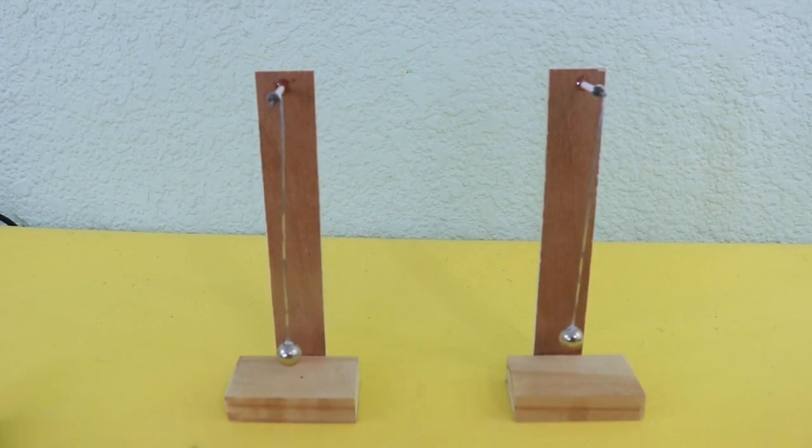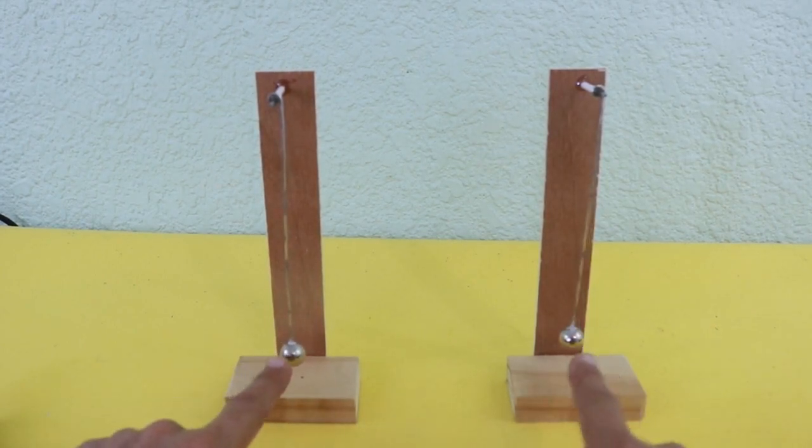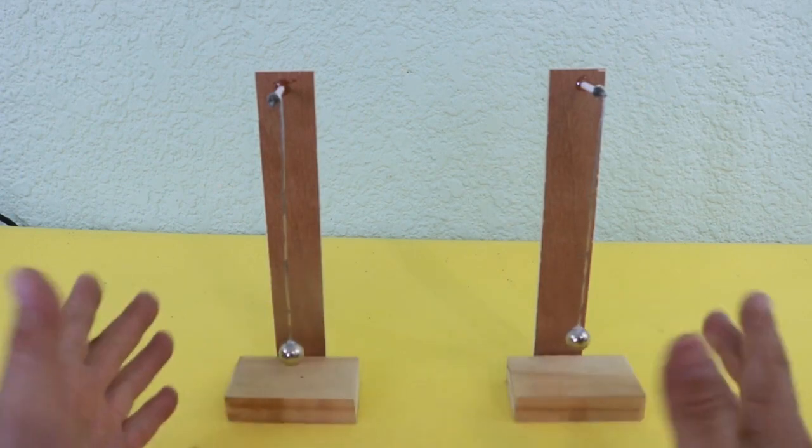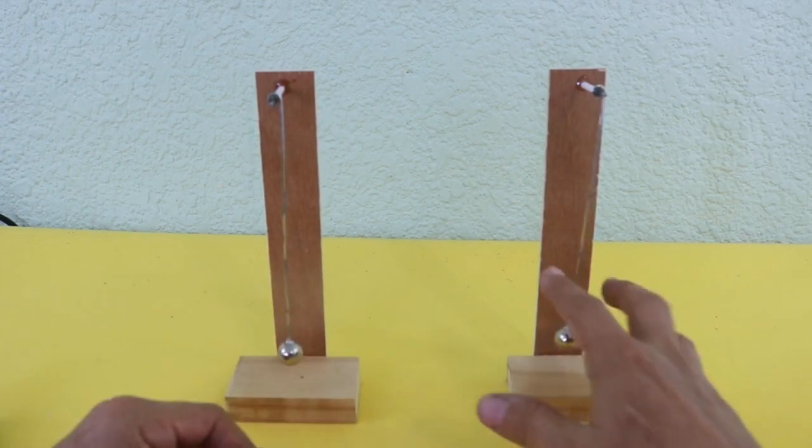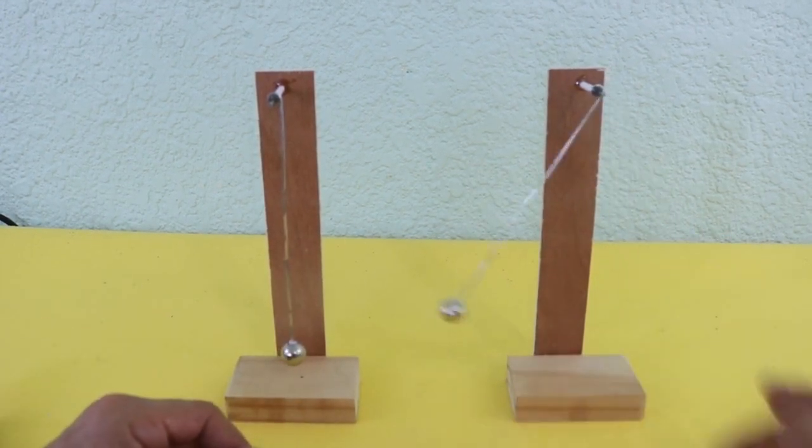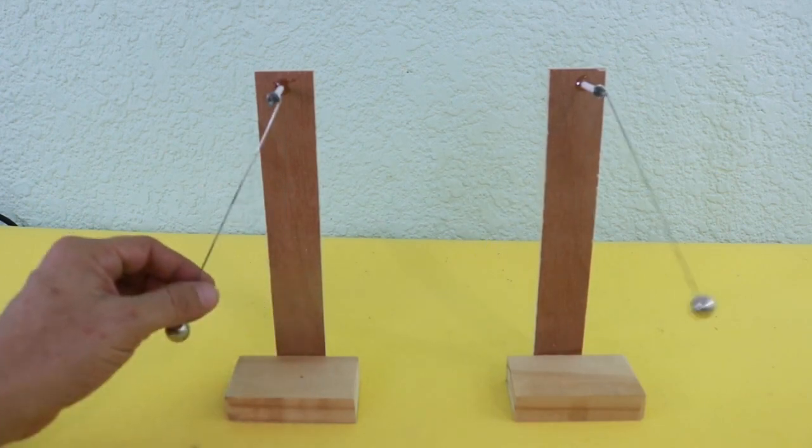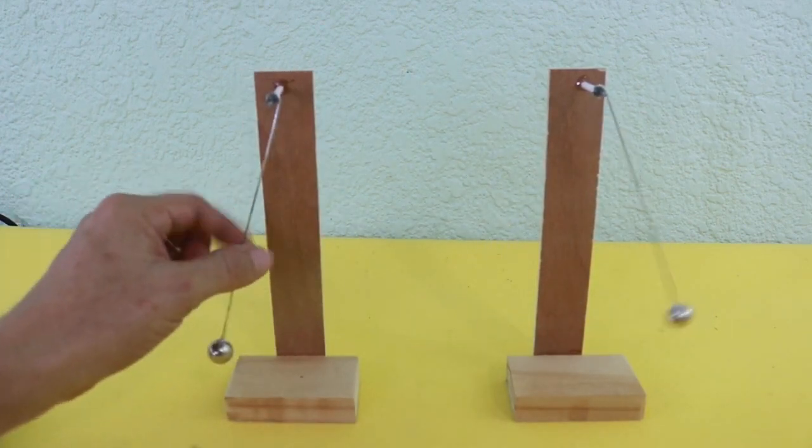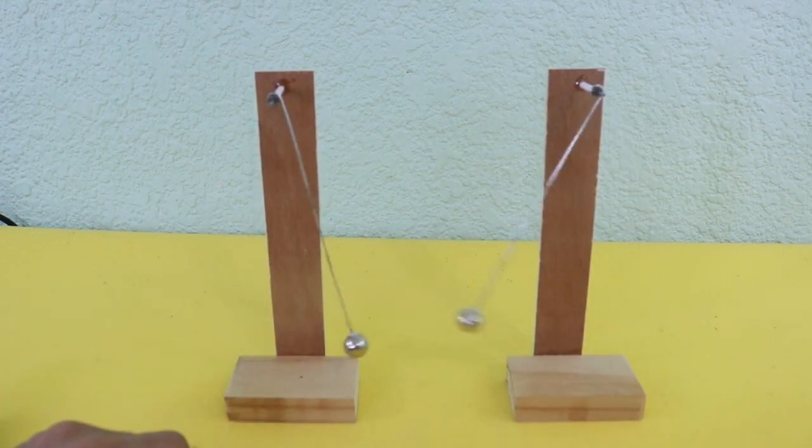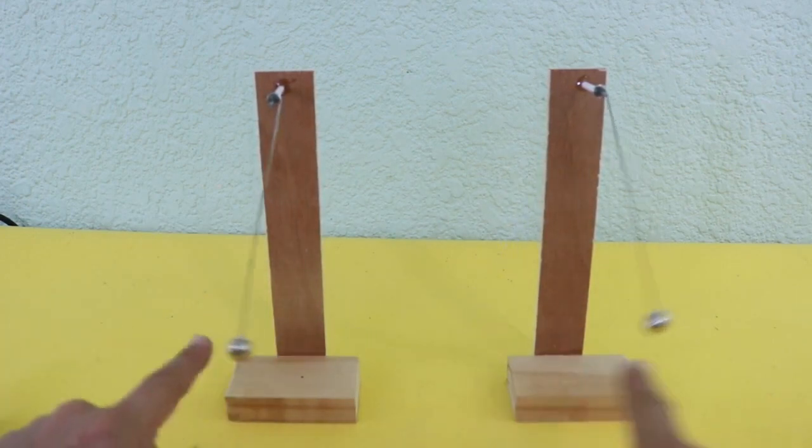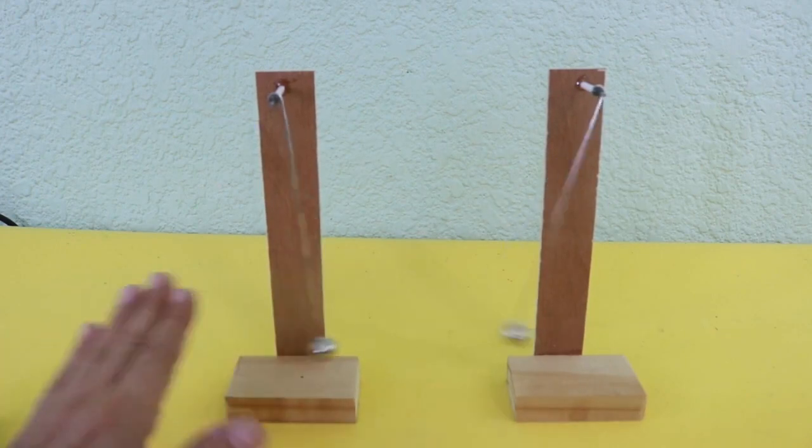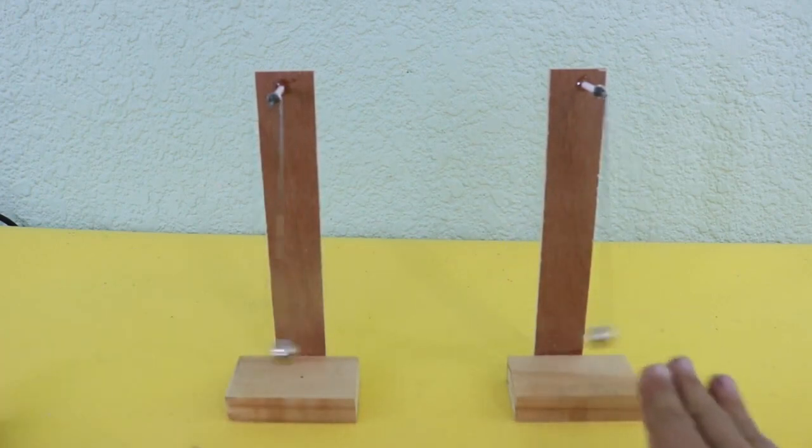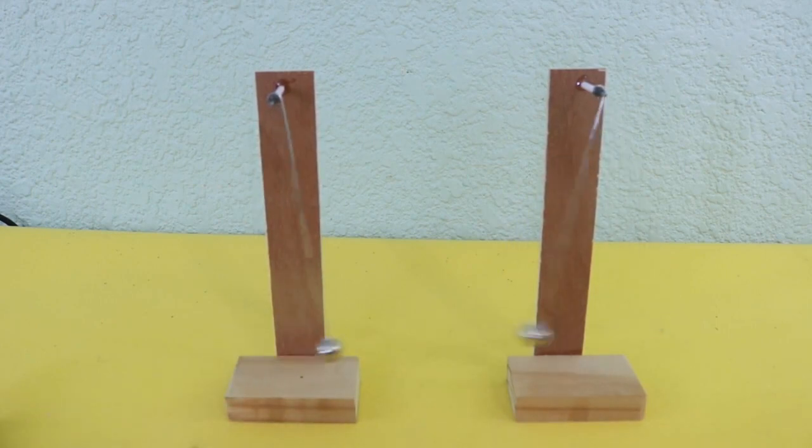Now, in normal circumstances, the pendulums are independent of each other. If I start one pendulum and then the other, the oscillations are independent. One pendulum oscillates and the other also oscillates, and they are not related to each other.